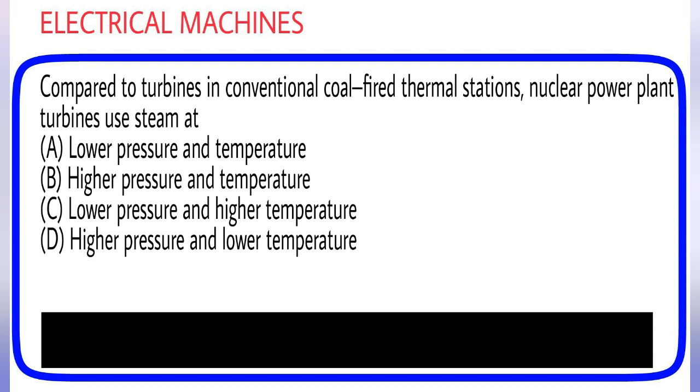Compared to turbines in conventional coal-fired thermal stations, nuclear power plant turbines use steam at: (A) Lower pressure and temperature, (B) Higher pressure and temperature, (C) Lower pressure and higher temperature, (D) Higher pressure and lower temperature. Answer is option A.